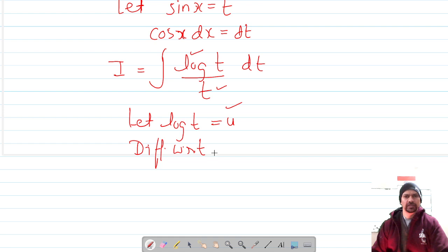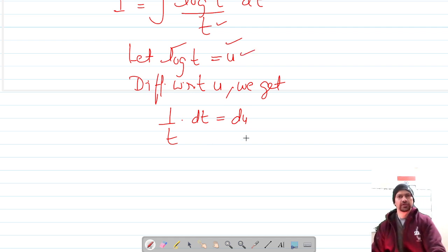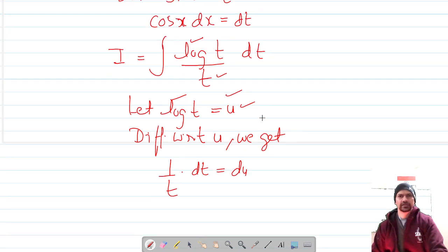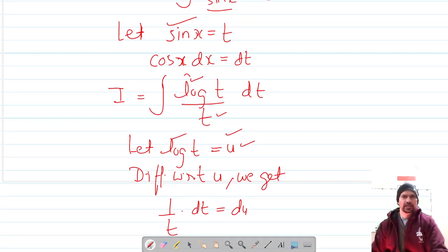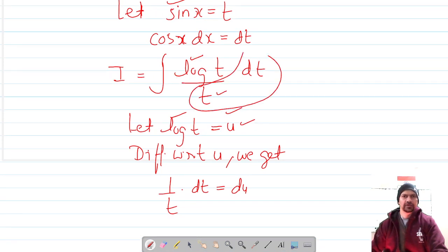This gives us d(log t)/du = (1/t) dt/du. Since differentiation of u is 1, we substitute du to the right-hand side. So 1/t dt = du, and log t = u.